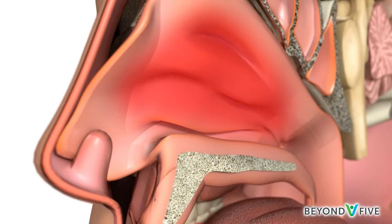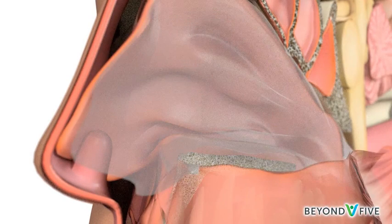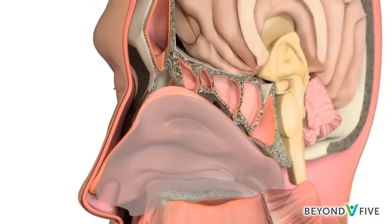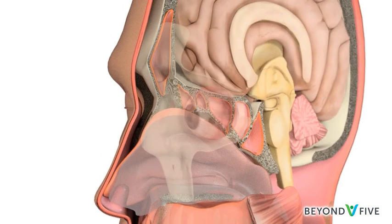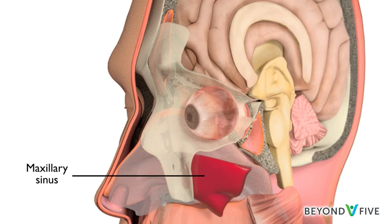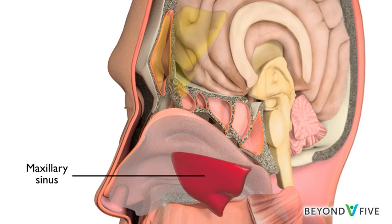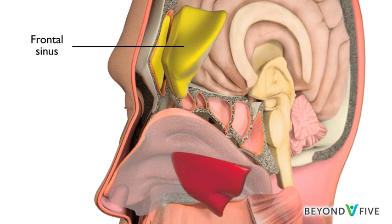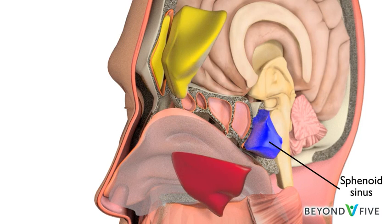The nasal cavity connects with the paranasal sinuses. These are air-filled spaces in the bones of the face. The paranasal sinuses include the maxillary sinus, the frontal sinus, the sphenoid sinus, and the ethmoid sinus.